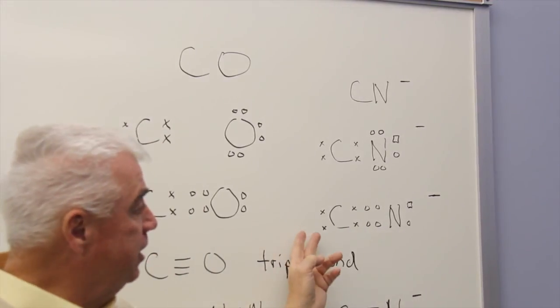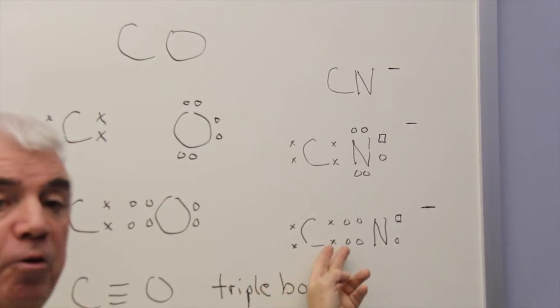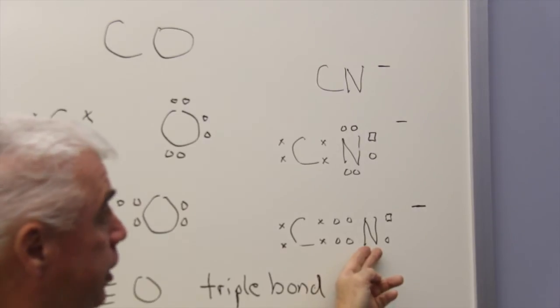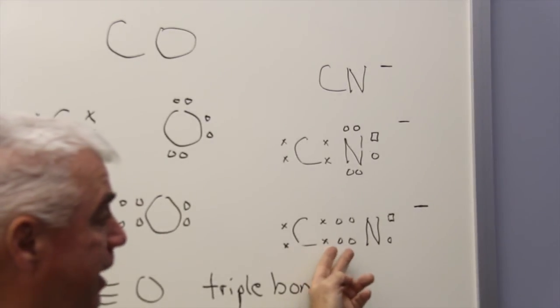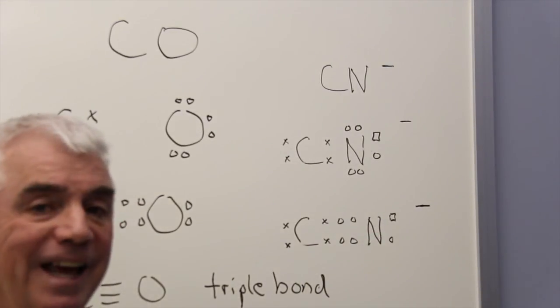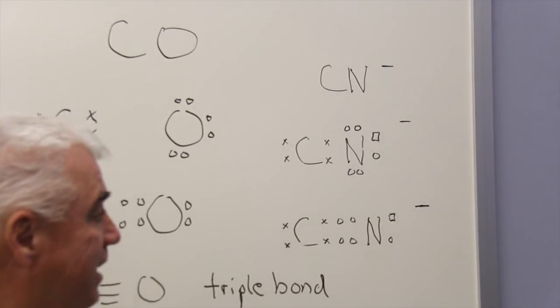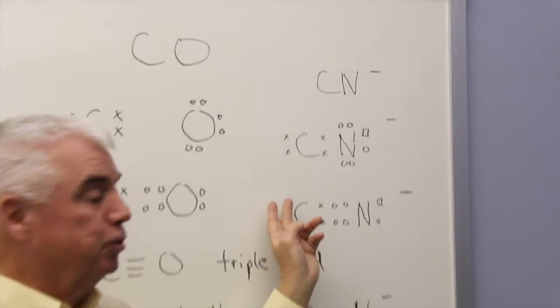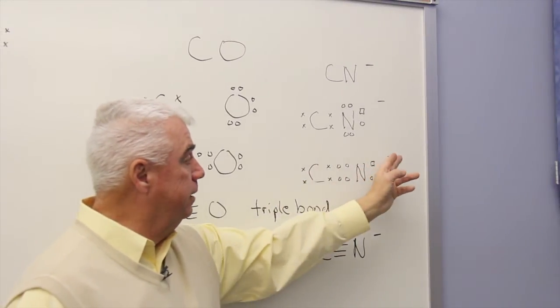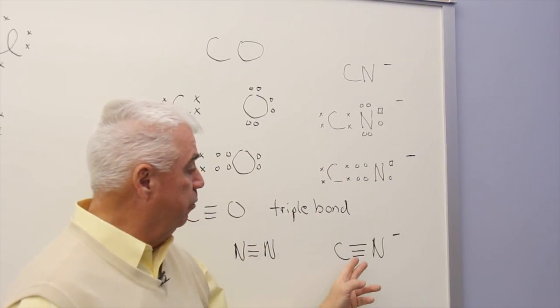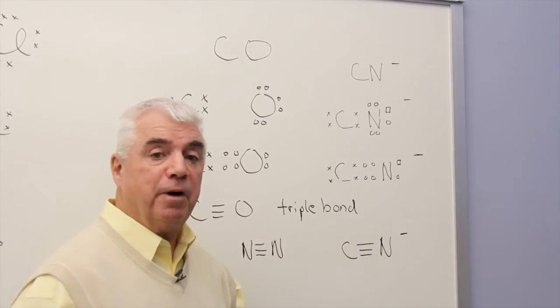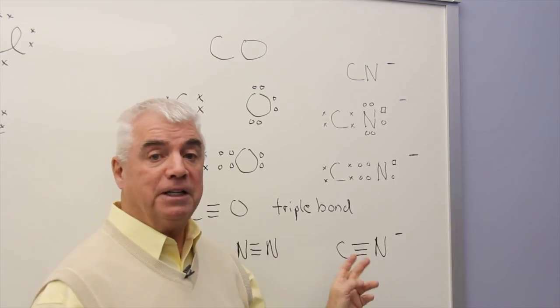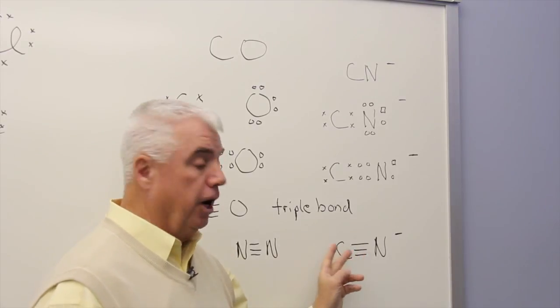And now we see that carbon has two of its own, six that are being shared, so it's happy. The nitrogen, six that are being shared, and two that it has for a total of eight. So here's the Lewis structure, or the electron dot structure, for CN minus. And it would be represented by a triple bond. This would be the covalent bond structure of this polyatomic ion, cyanide.